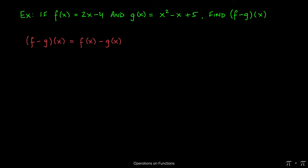Recall that f minus g of x is simply f of x minus g of x. It's just notation for the subtraction or the difference of two functions. So here we replace f of x with 2x minus 4 and g of x with x squared minus x plus 5.